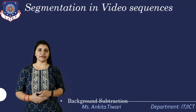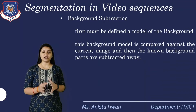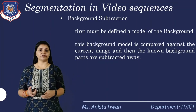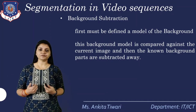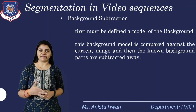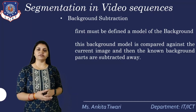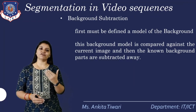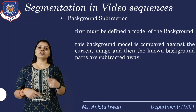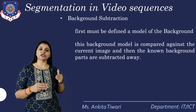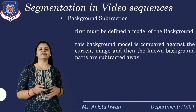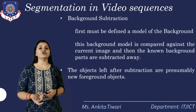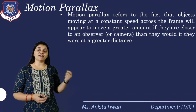Segmentation of video sequences using background subtraction: first, we must define a model of the background. This background model is compared against the current image. Then the known background parts are subtracted. To perform segmentation of a particular background with respect to an image, we first find the model of the background, compare it against the current image, separate it out, and then the known background which we have already found is separated away from the image. The objects left after the subtraction are presumably the new foreground objects.